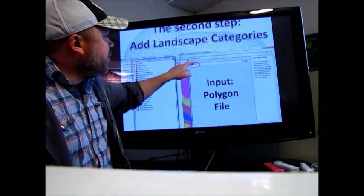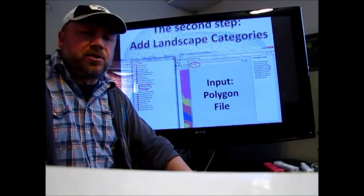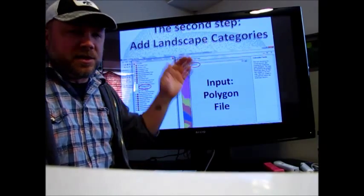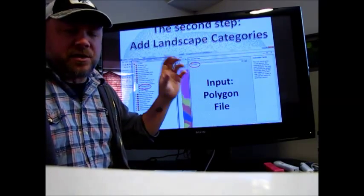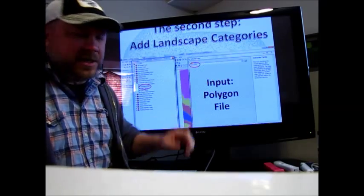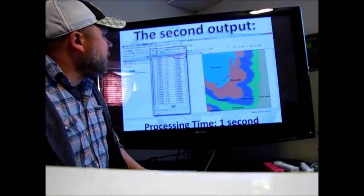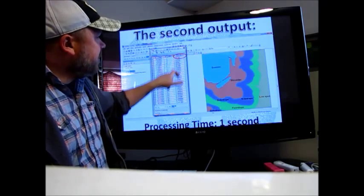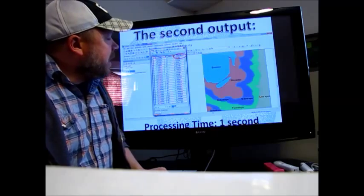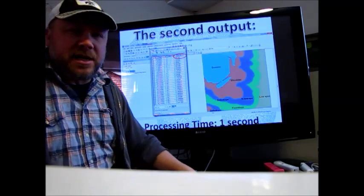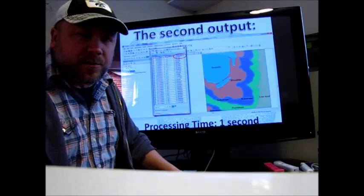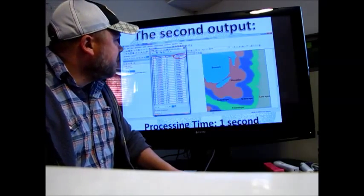You would input that polygon file that you just created, and what this is going to do is calculate and assign a category to each of the polygons. After you run that tool, you'll have a new field in that polygon that assigns a landscape category to that particular polygon. That's the second output.